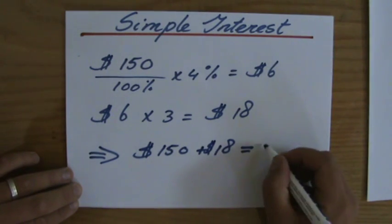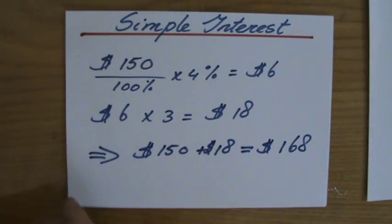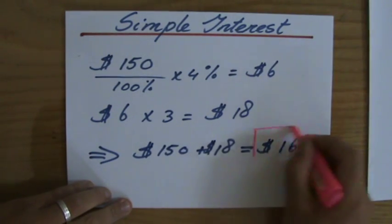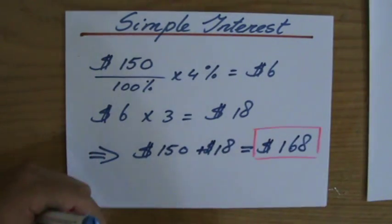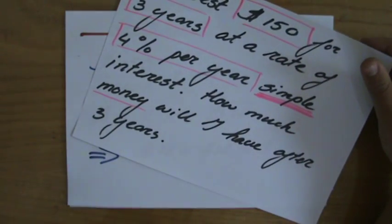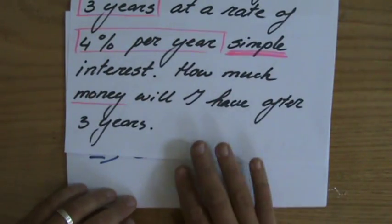My final answer will be $168. Don't be too excited when you have that $18. Make sure to read the question properly. They're asking how much money will I have after three years, so I have to do that addition at the end.